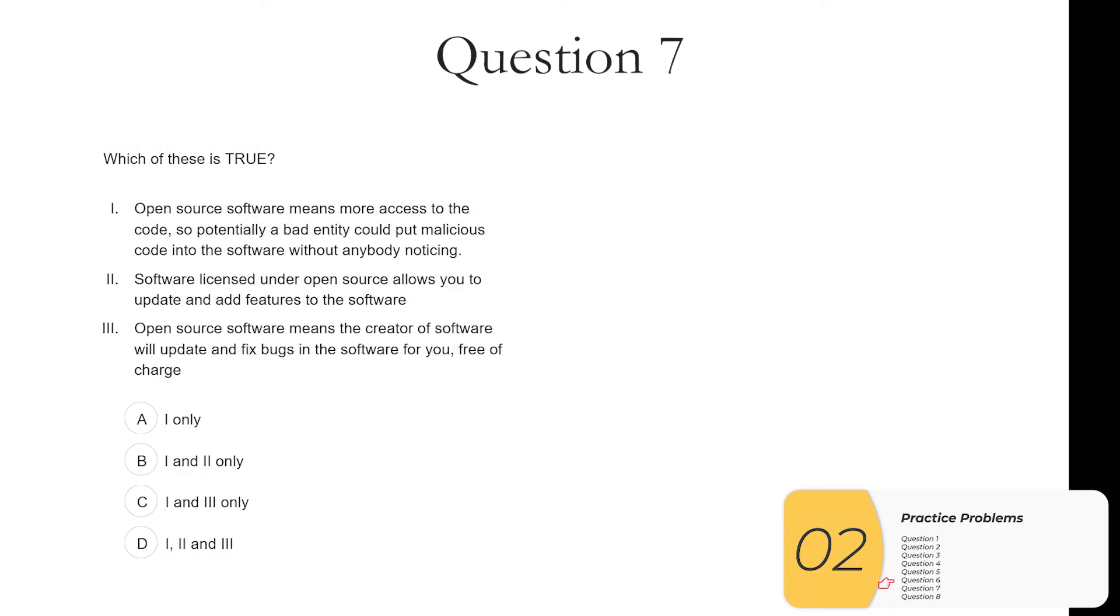Question seven. Which of these is true? One. Open source software means more access to the code, so potentially a bad entity could put malicious code into the software without anybody noticing. This is true. Open source software allows access to the code and often, very often, are community based projects, meaning that people from the community are adding and changing the code which carries with it some risk. Two. Software licensed under open source allows you to update and add features to the software. So this is what we just talked about and this is true.